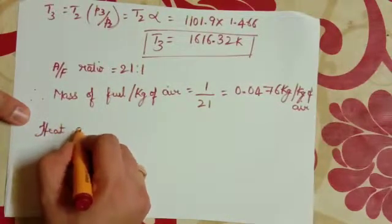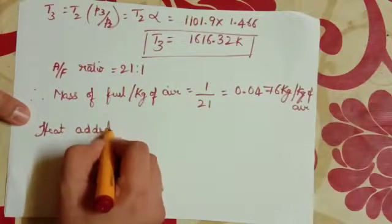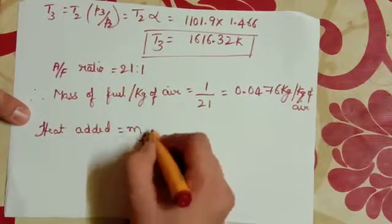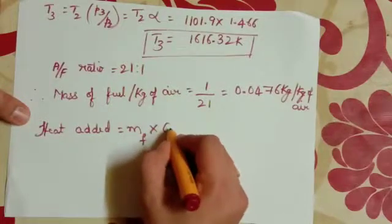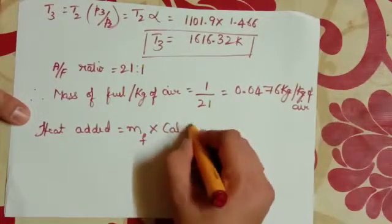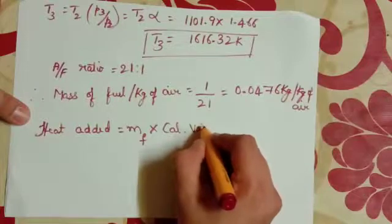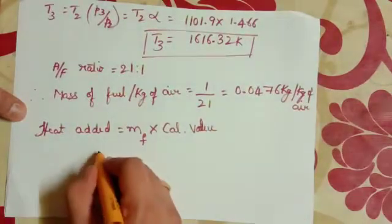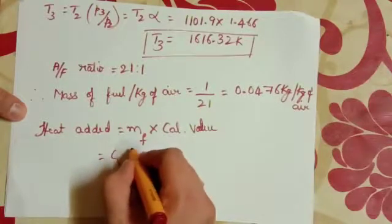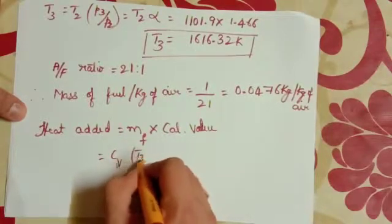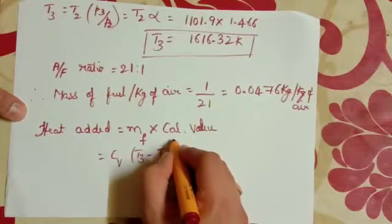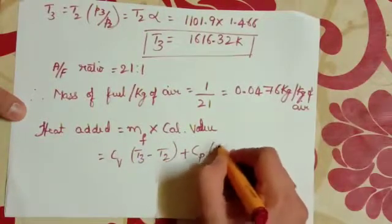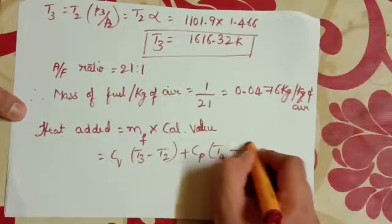And heat added, that is equal to MF into calorific value, which is equal to CV into T3 minus T2 plus CP into T4 minus T3.